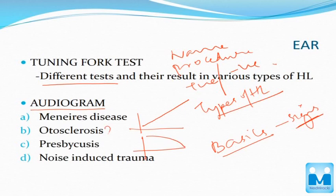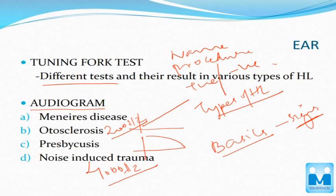In presbyacusis, the slant will go down because high frequency is lost. In otosclerosis, there is a dip at 2000 Hz known as Carhart's notch. In noise-induced trauma, the dip is at 4000 Hz. So you have to know first the basics of audiogram, and second the audiogram images seen in various diseases — these two things are important.